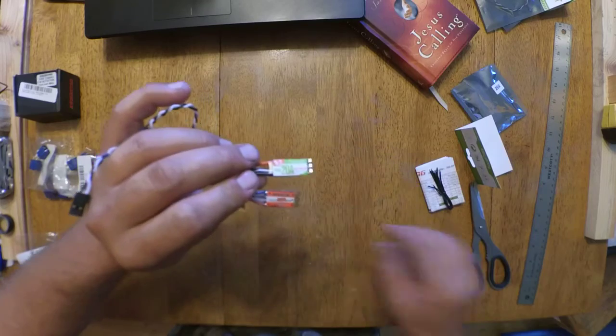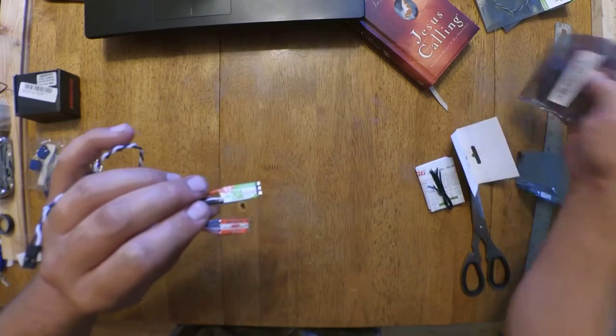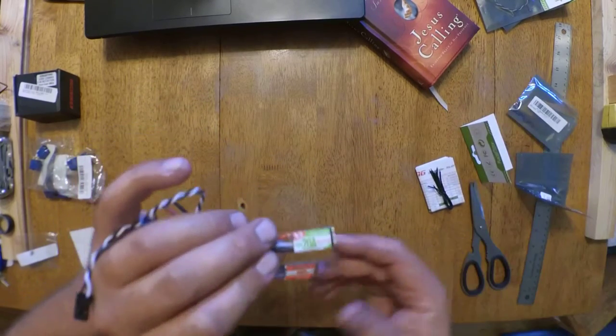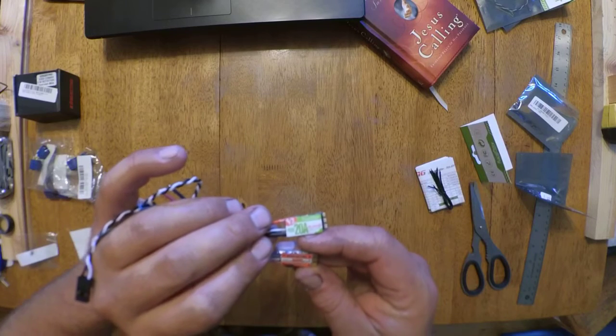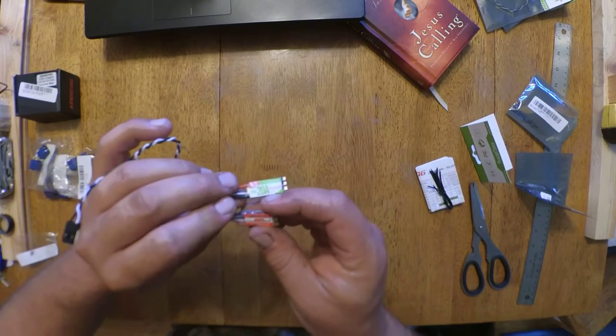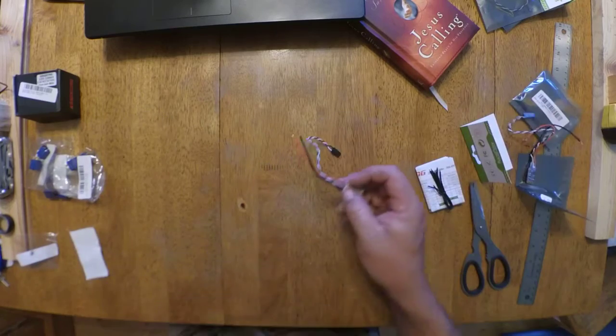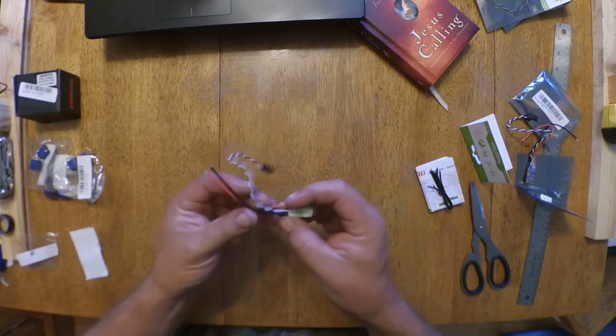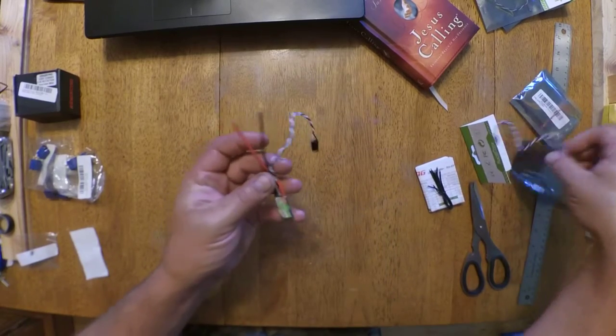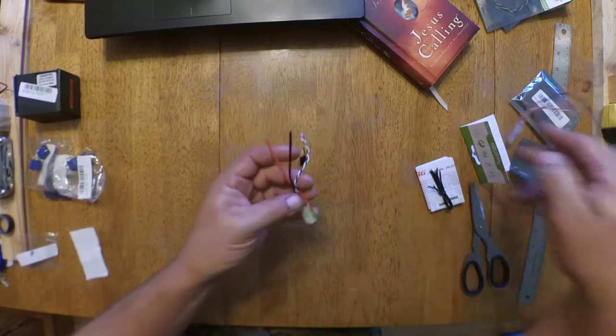I don't remember if the King Kongs are BLHeli-S or not. I believe they are, but I'm not sure. I'd have to look again. But yeah, they will definitely go on a small build for sure.